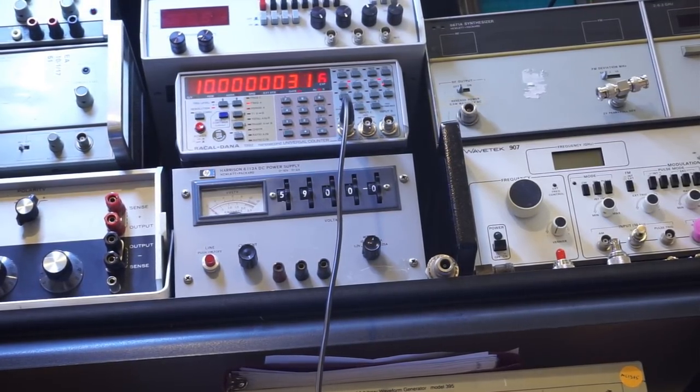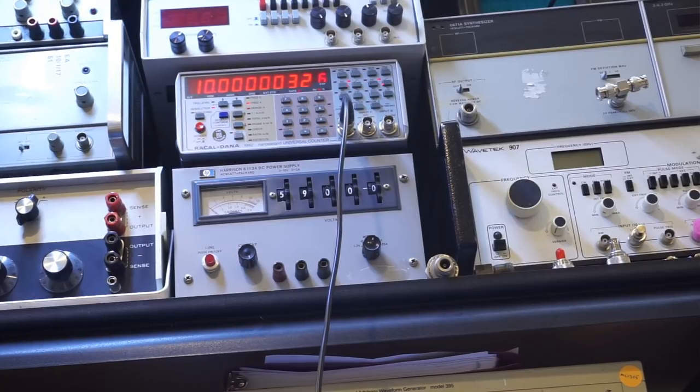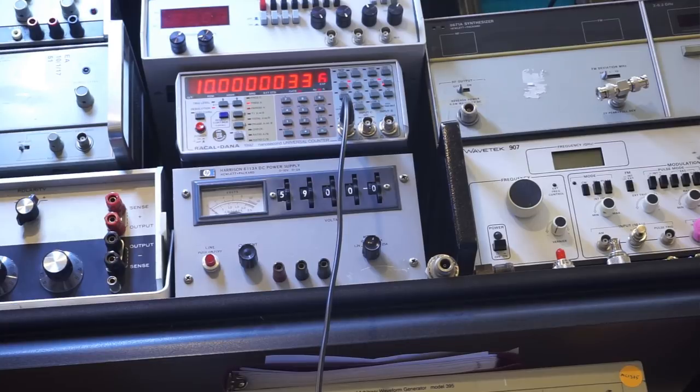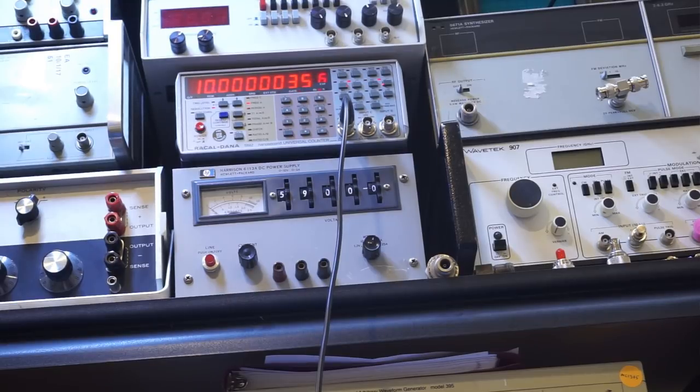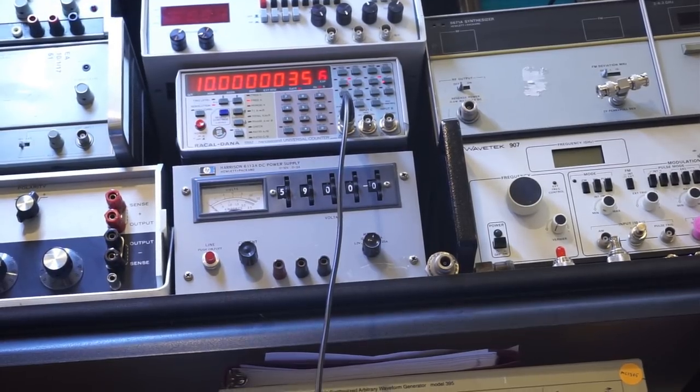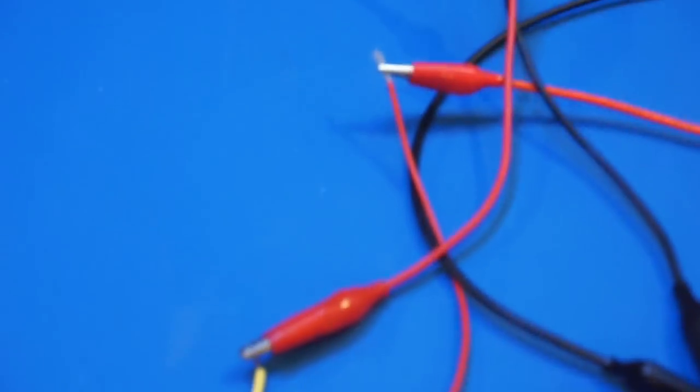So after adjusting both trimmers back and forth, I think I reached a point where I think this is probably the best I can get. Now you can see that we are a little bit off. But the main trimmer, which is the trimmer that we originally have on this TCXO, so let me just show you here.